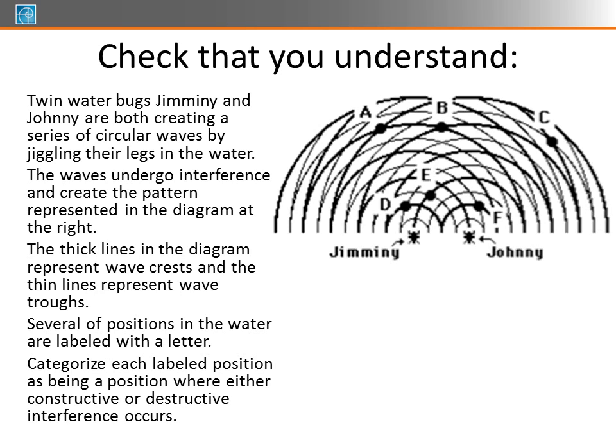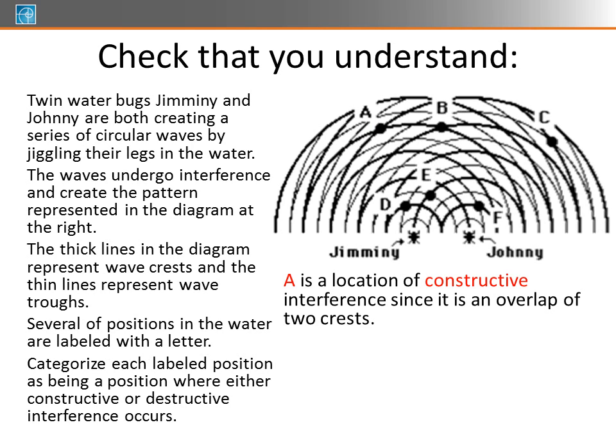Okay, so now that you've got a guess on these, at least looked at it a little bit, let's go through the answers on these. So A has a crest from one and a crest from the other, so a crest and a crest give us constructive interference. So A has a crest and a crest. So again, it should have constructive interference.